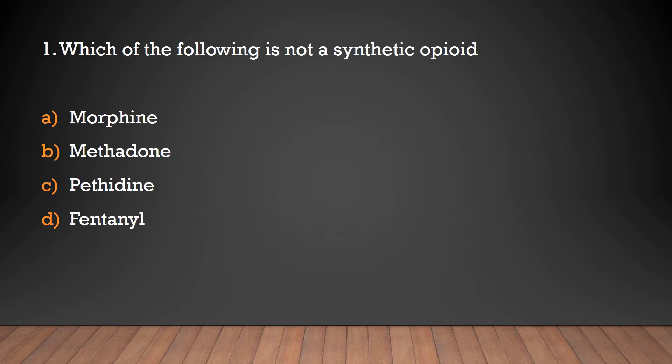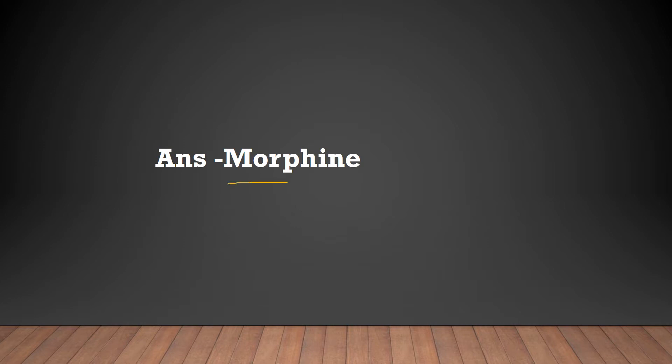Which of the following is not a synthetic opioid? Morphine, Methadone, Pethidine, Fentanyl. The answer is Morphine. Morphine is a natural opioid.